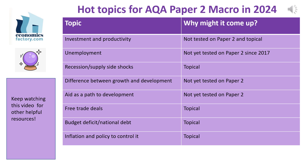Unemployment is perhaps due for testing as well — it hasn't been tested since 2017, so it could come up on Paper 2 or Paper 3. It would make a great Paper 3 question, because it could be accompanied by aspects of microeconomics, looking at particular sectors where there have been labour shortages in recent years and where firms have struggled to recruit to sustain the growth of their businesses.